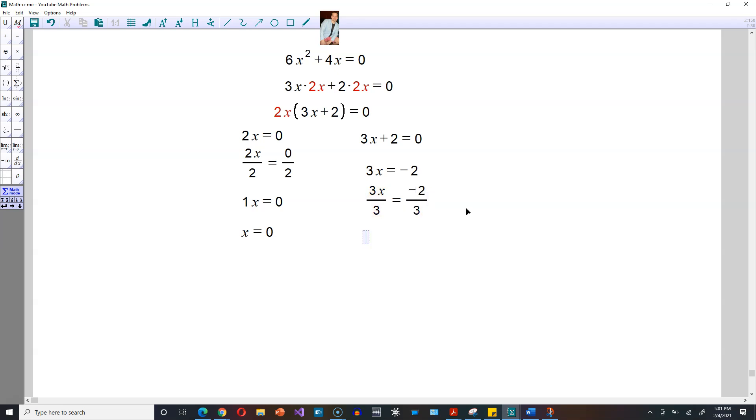Of course, 3 divided by 3 is 1, so you end up with 1x equals here, negative 2 divided by 3. Everybody, of course, just writes this as x equals negative 2 thirds.